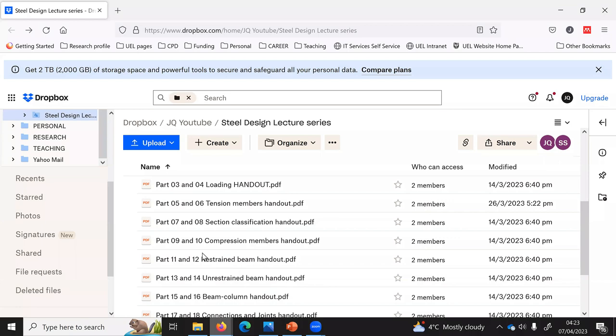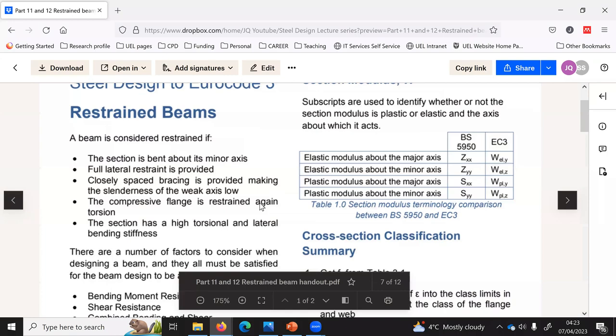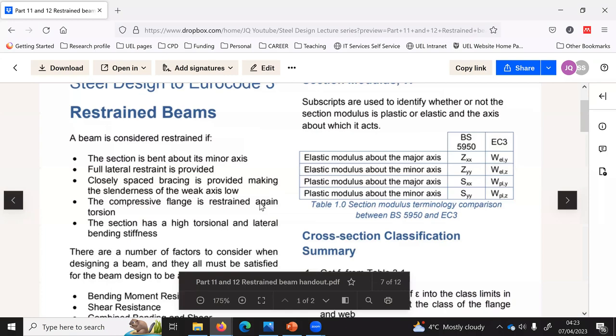All design formulas discussed in here are in this website bit.ly/steeldesign. If you go to this website, no sign-in is required. If you click on part 11 and 12, restrained beam, it will take you to this two-page design recipe where all design checks are mentioned for steel beams.